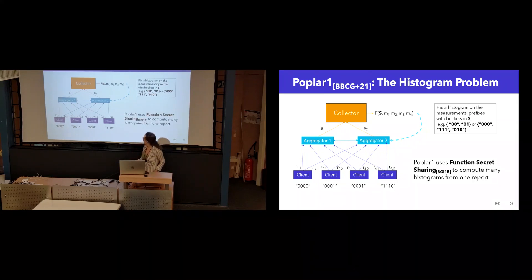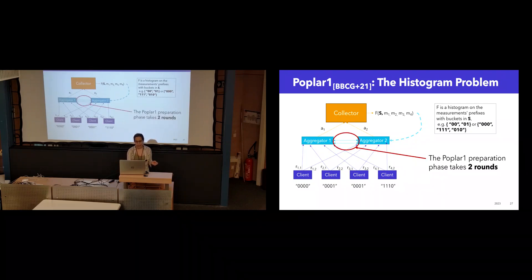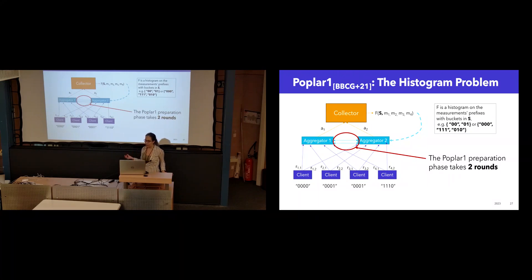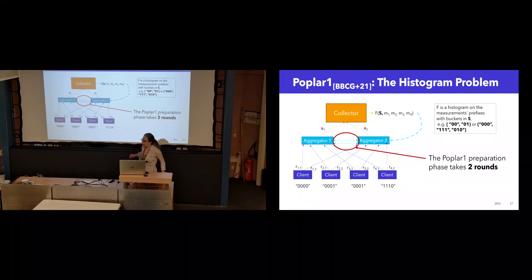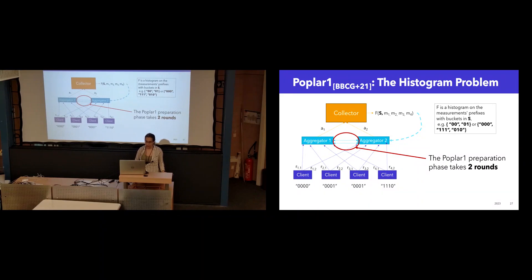So I won't go into the details of how Poplar1 works, but it uses function secret sharing to compute many histograms from one report. And unfortunately, the way that it validates its reports takes two rounds between the aggregators rather than one.